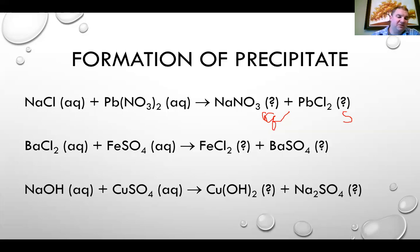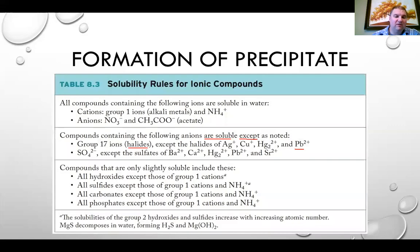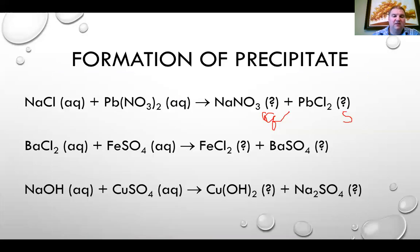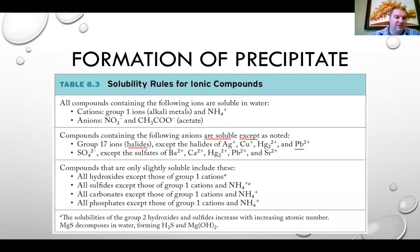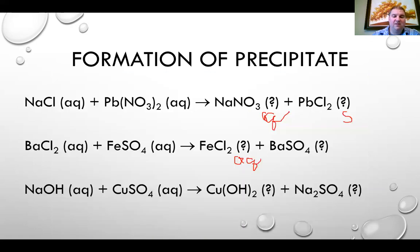For barium chloride and iron(II) sulfate mixed: barium and iron swap spots. Iron goes with chloride — chlorides are soluble and iron is not an exception, so iron(II) chloride is aqueous. Barium goes with sulfate — sulfates are generally soluble except for barium, which is listed as an exception. So barium sulfate is a solid precipitate.